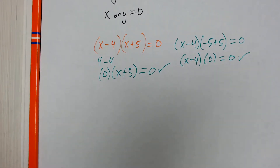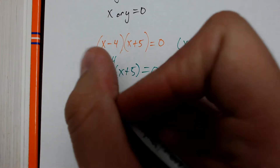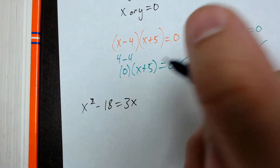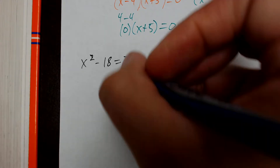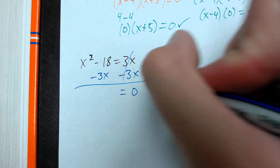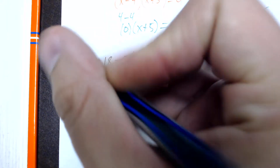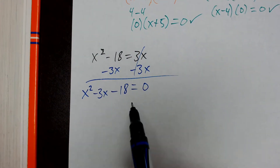Now let's see how this works with quadratic equations. Say we have x squared minus 18 equals 3x. The first thing we do is set this equation equal to zero so we can use the Zero Factor Theorem. We subtract 3x from each side — the right side cancels — and we get x squared minus 3x minus 18 equals zero.